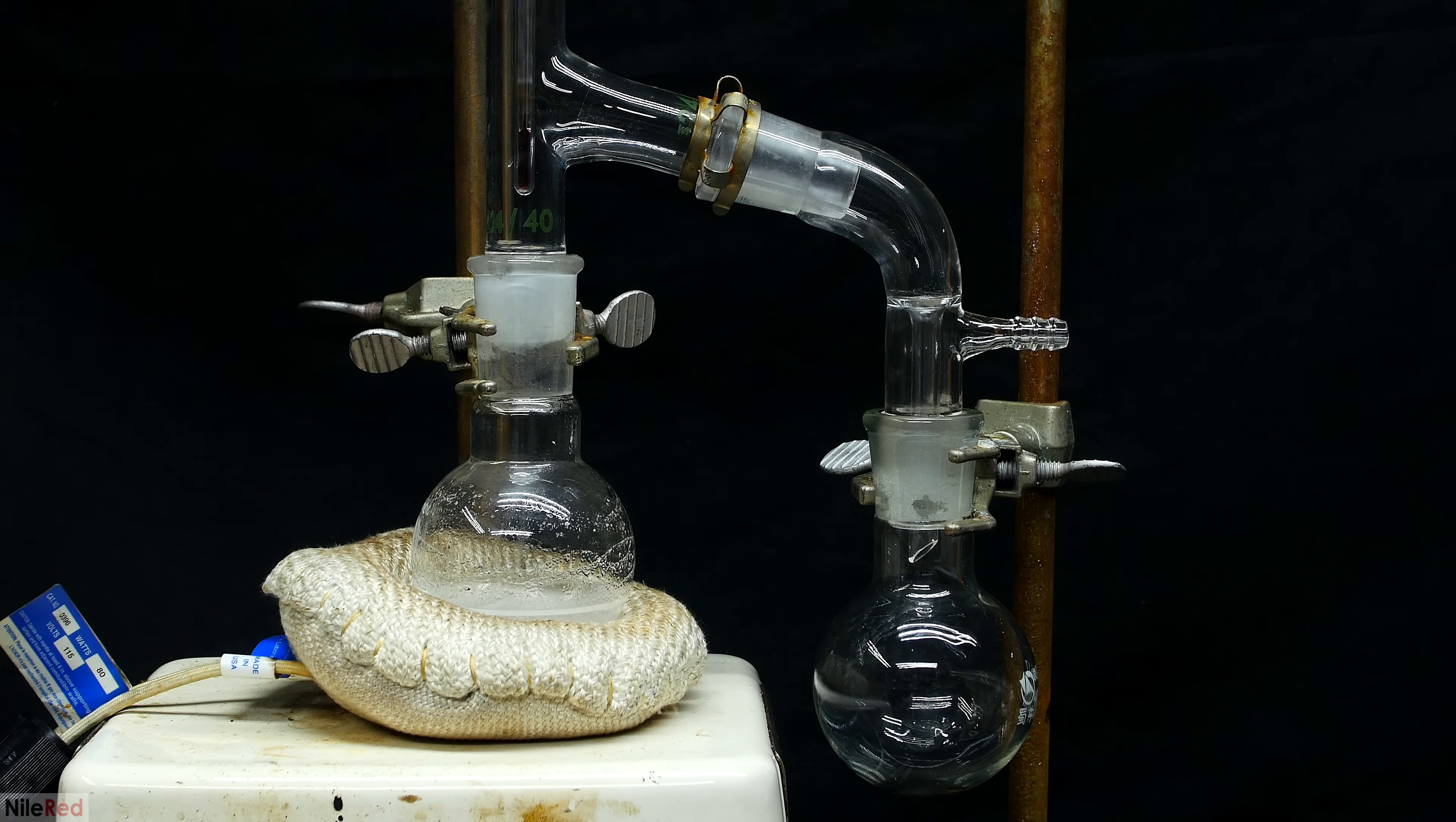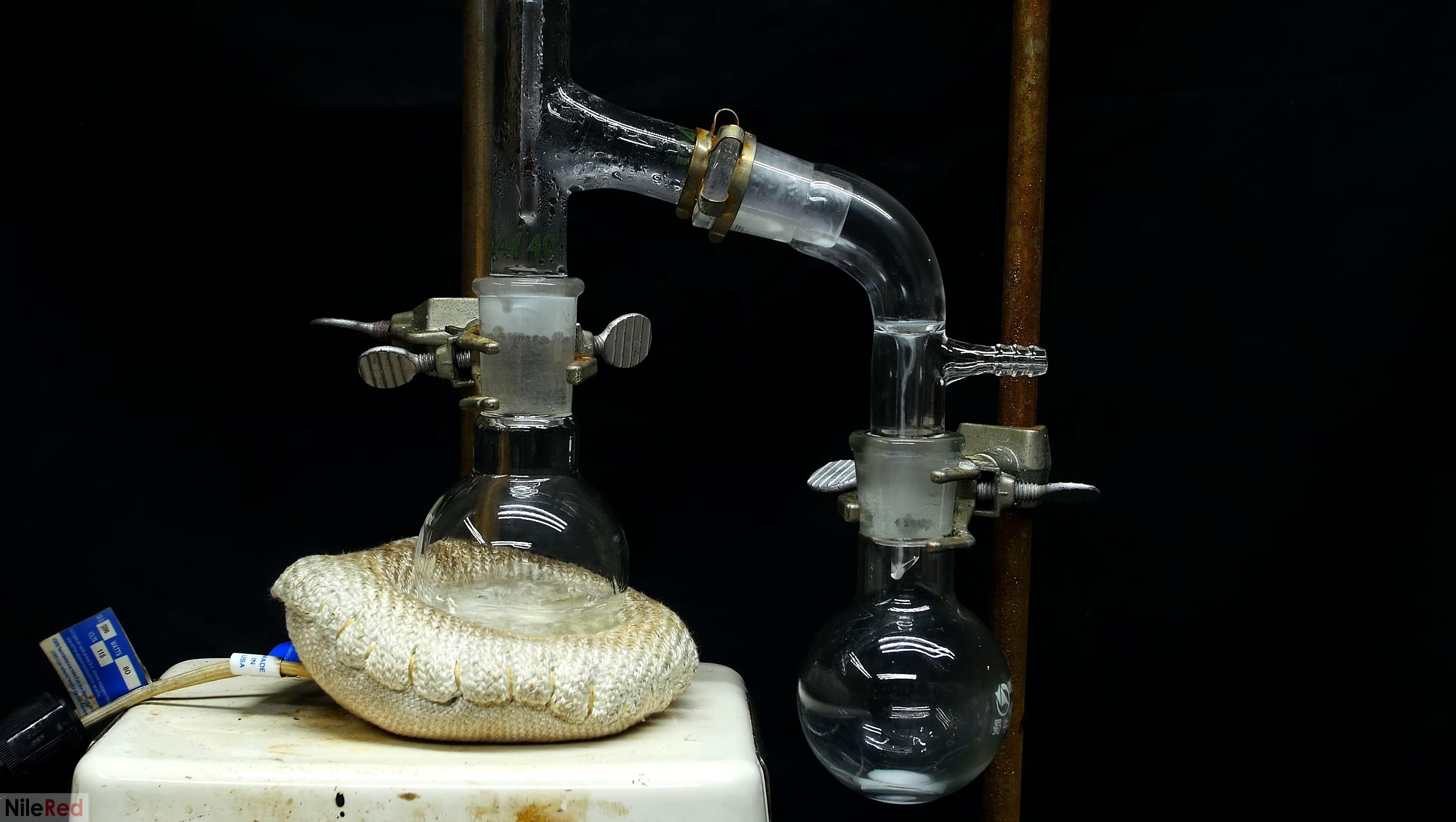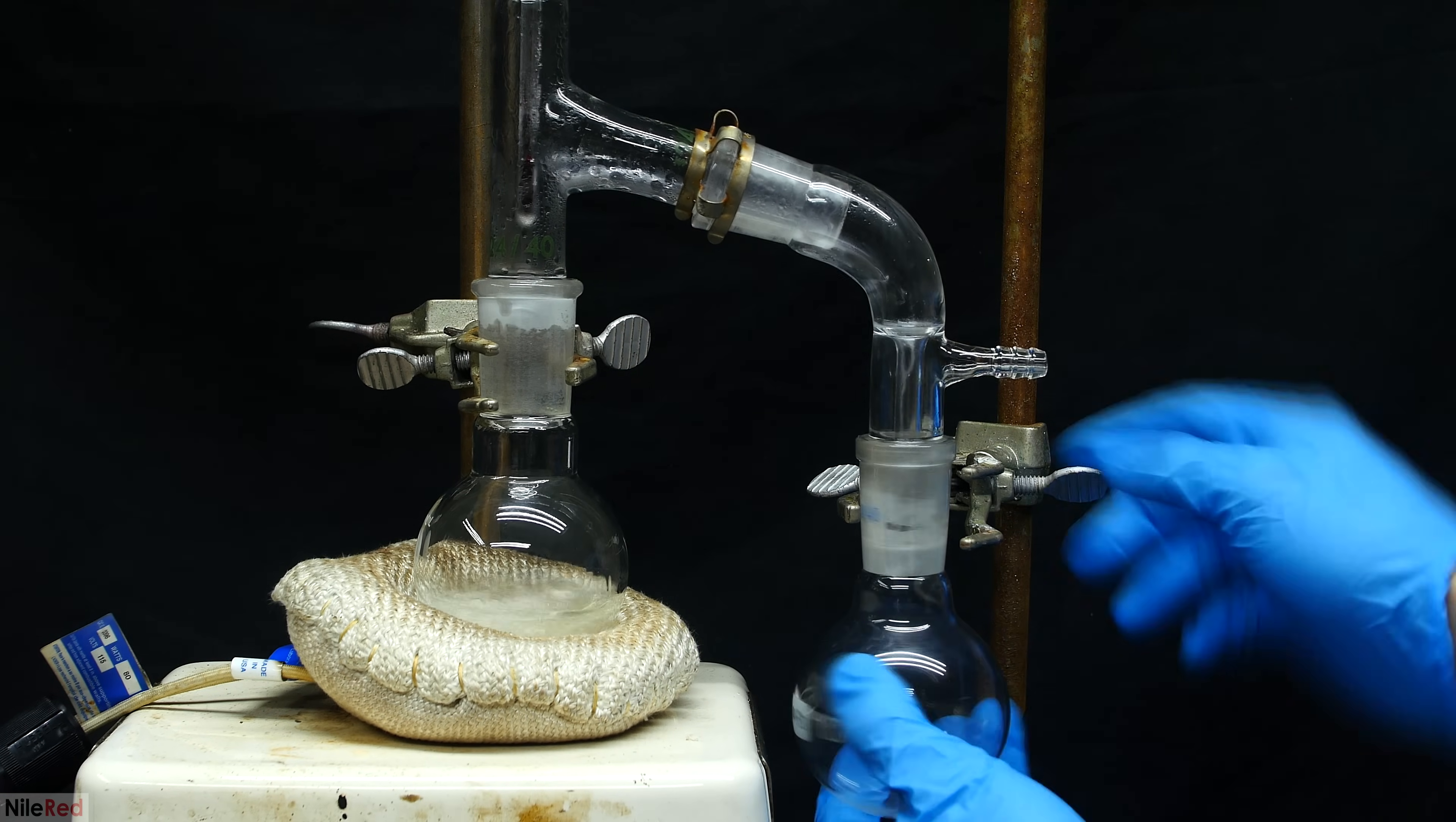Now it's time to do a second distillation to purify the phenol. So to get things started, I turn on the heating mantle as well as the stirring. It doesn't take long for things to start coming over, but like before, it's this milky white stuff.